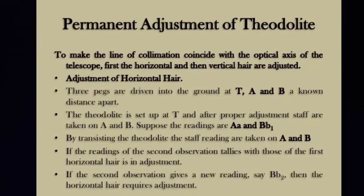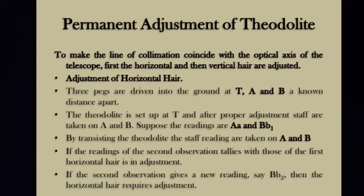The second adjustment is to make the line of collimation coincide with the optical axis of the telescope. We will use two methods. One is the adjustment of the hair — first the horizontal hair and the vertical hair are to be adjusted.